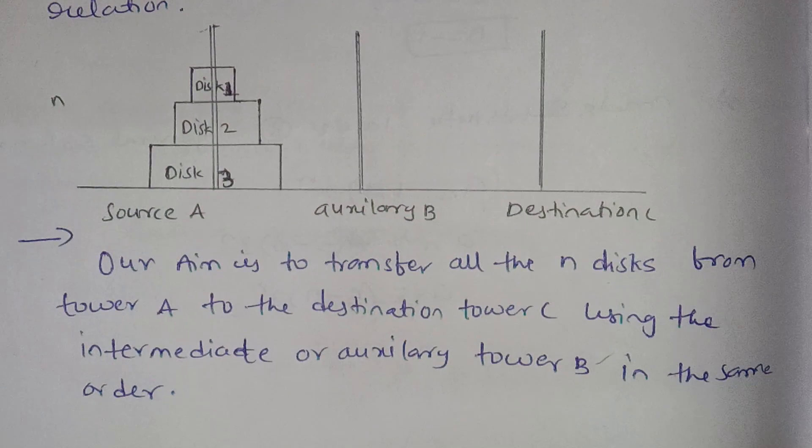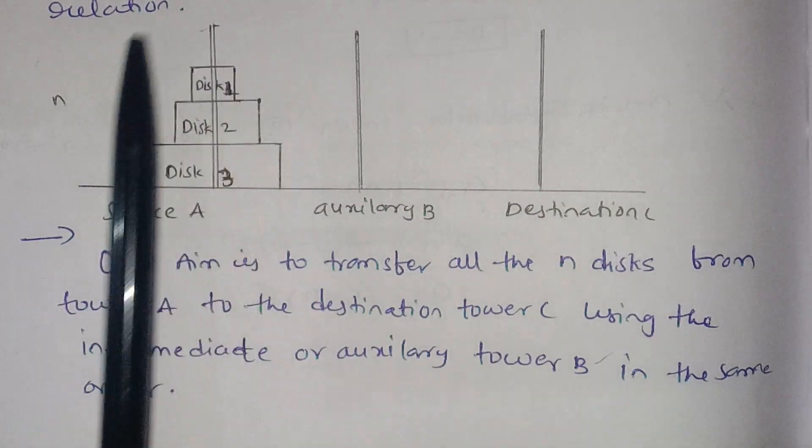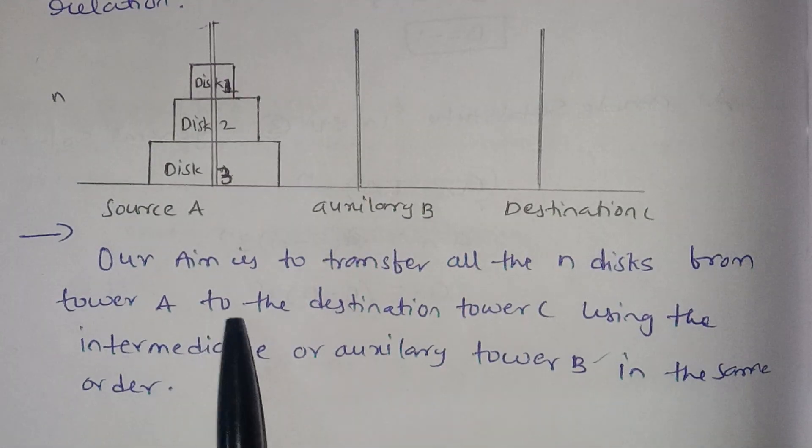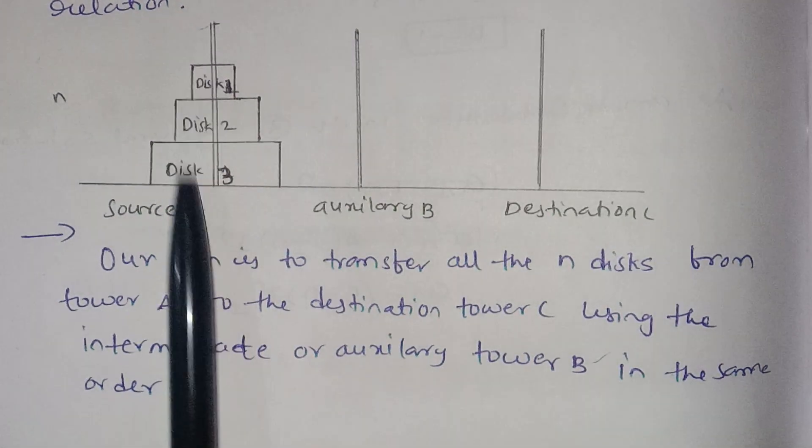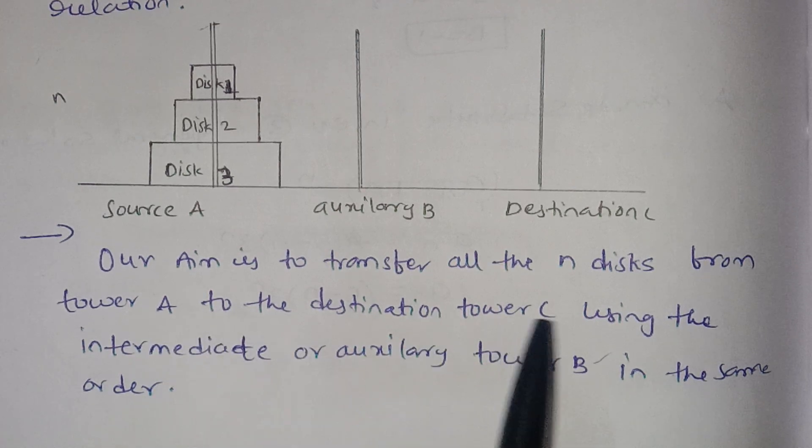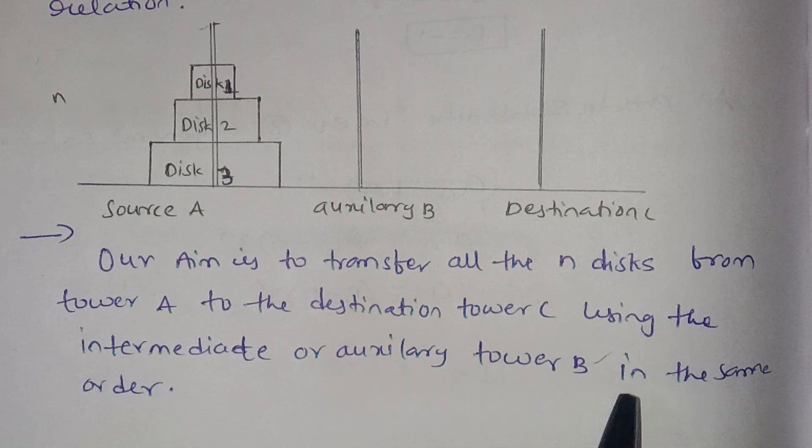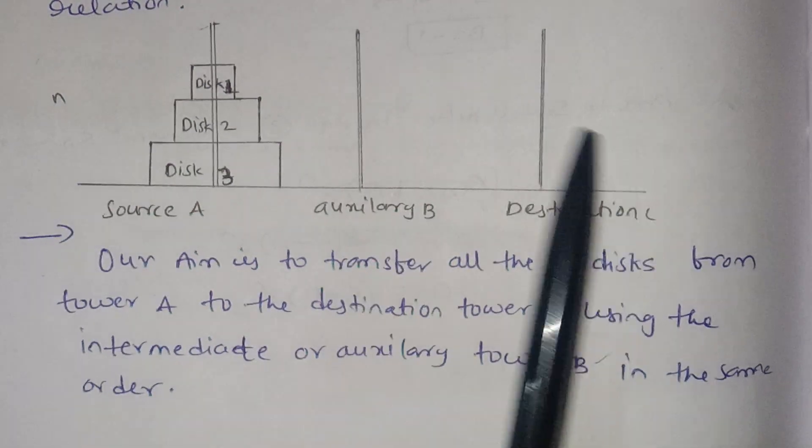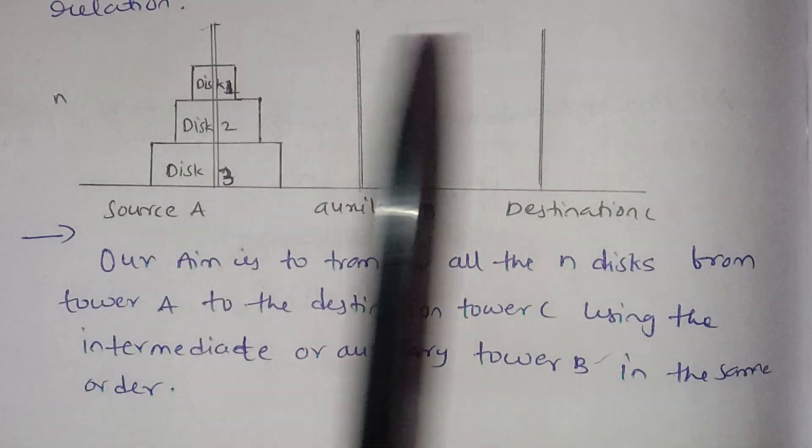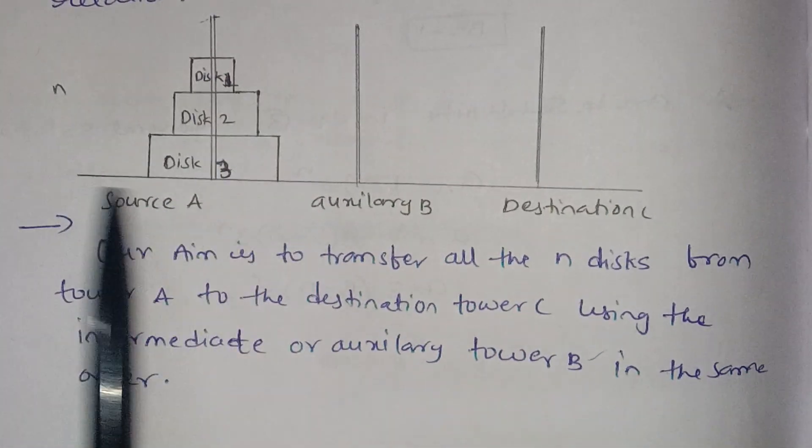Our aim is to transfer all the n disks from tower A to destination tower C using the intermediate auxiliary tower B.